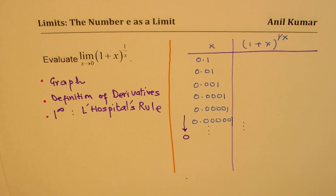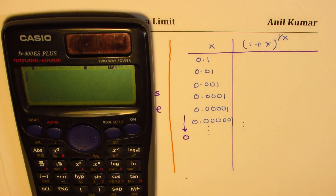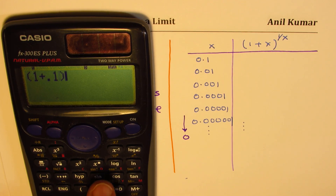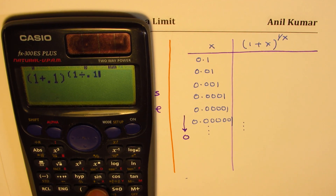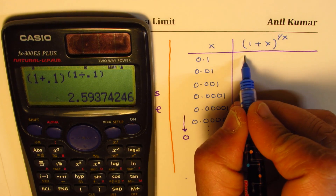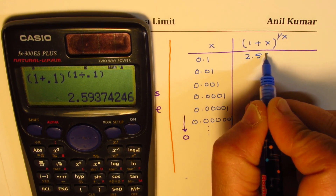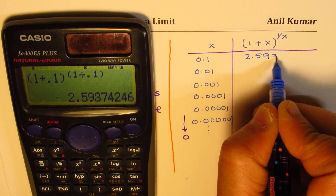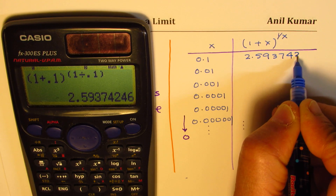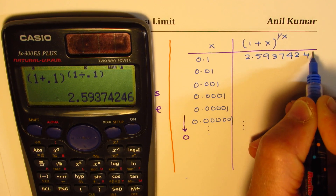Using the calculator, within brackets we have 1 plus 0.1, bracket close, to the power of 1 divided by 0.1, and this equals 2.593742, 4, 6.